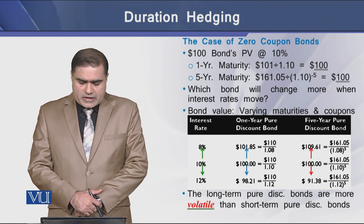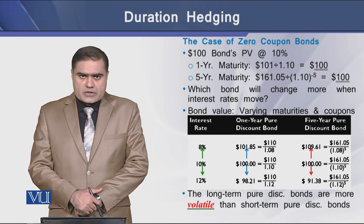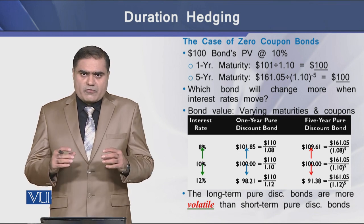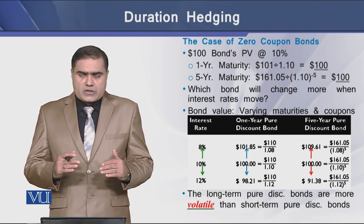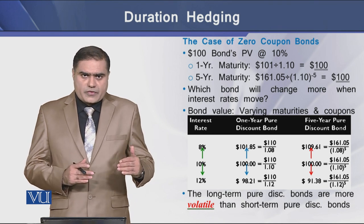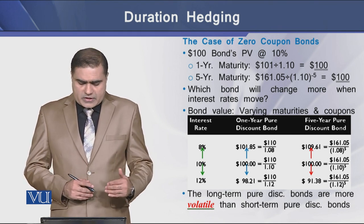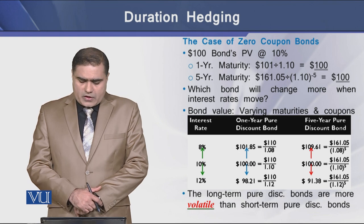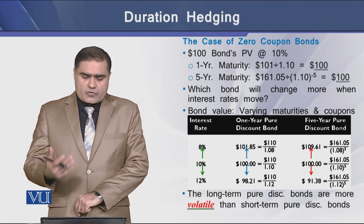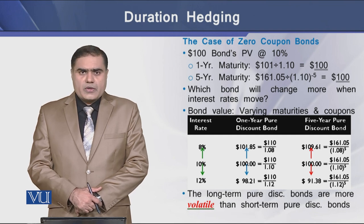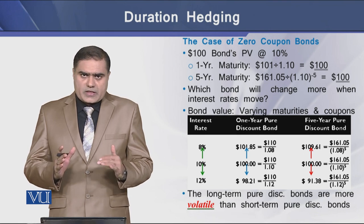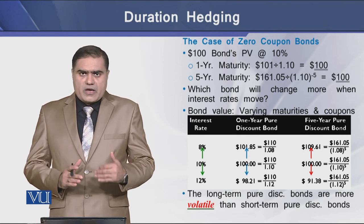We have a table showing interest rate movements. The next column is the 1-year period of the pure discount bond and the second is the 5-year period of the pure discount bond. We are valuing 2 bonds of 2 different maturities using 3 different interest rates: 8%, 10%, and 12%. From the table we can conclude that long-term pure discount bonds are more volatile than short-term pure discount bonds, as is evident in the price movements of the 5-year maturity bond.